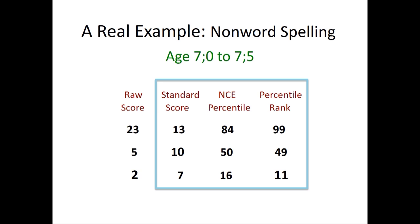Now look at the difference between NCE percentiles and the percentile ranks. The mean standard score of 10 aligns with the NCE percentile of 50, and this is actually pretty close to the percentile rank of 49. However, a standard score of 13 is a percentile rank of 99, while the NCE percentile is only 84. This is because a raw score of 13 is actually rare at this age, when children are still acquiring sound-symbol correspondence and regular spelling conventions. Because of this, the NCE percentiles and the percentile ranks diverge at this age. We also see a smaller discrepancy at a standard score of 7, where the NCE percentile is higher than the percentile rank, indicating that the normative distribution is skewed towards the lower scores relative to the normal distribution.